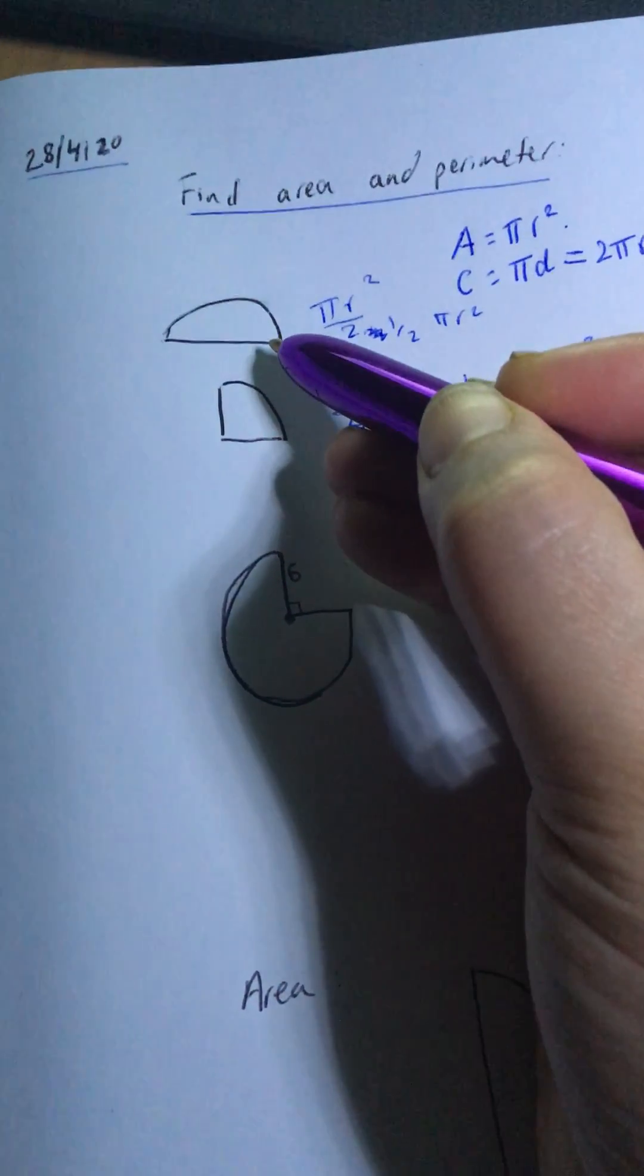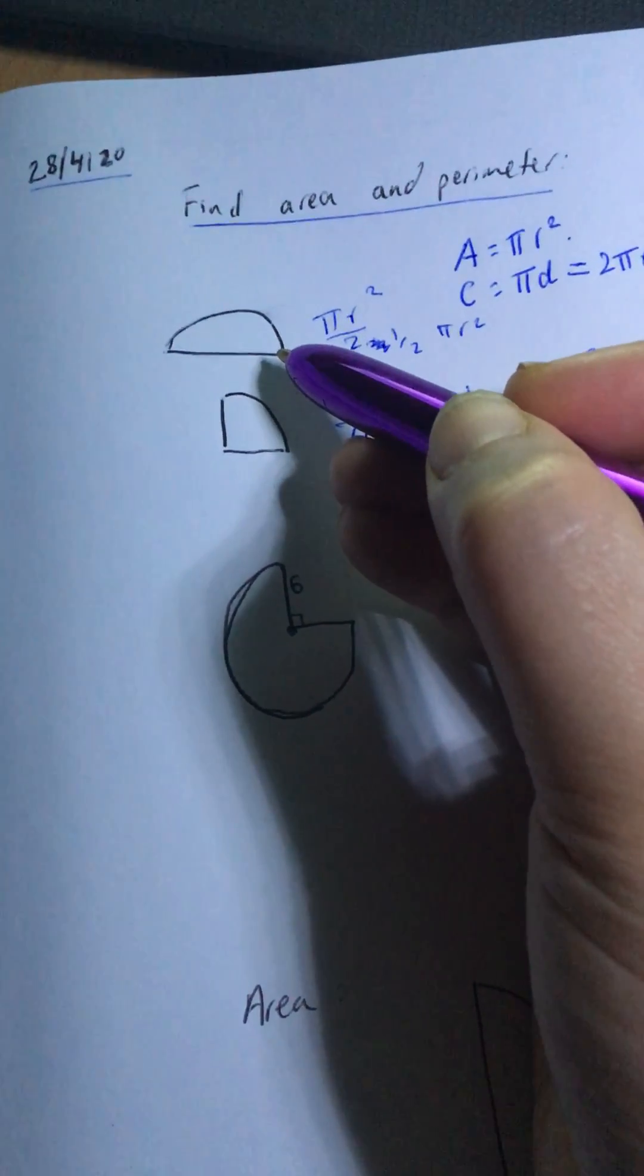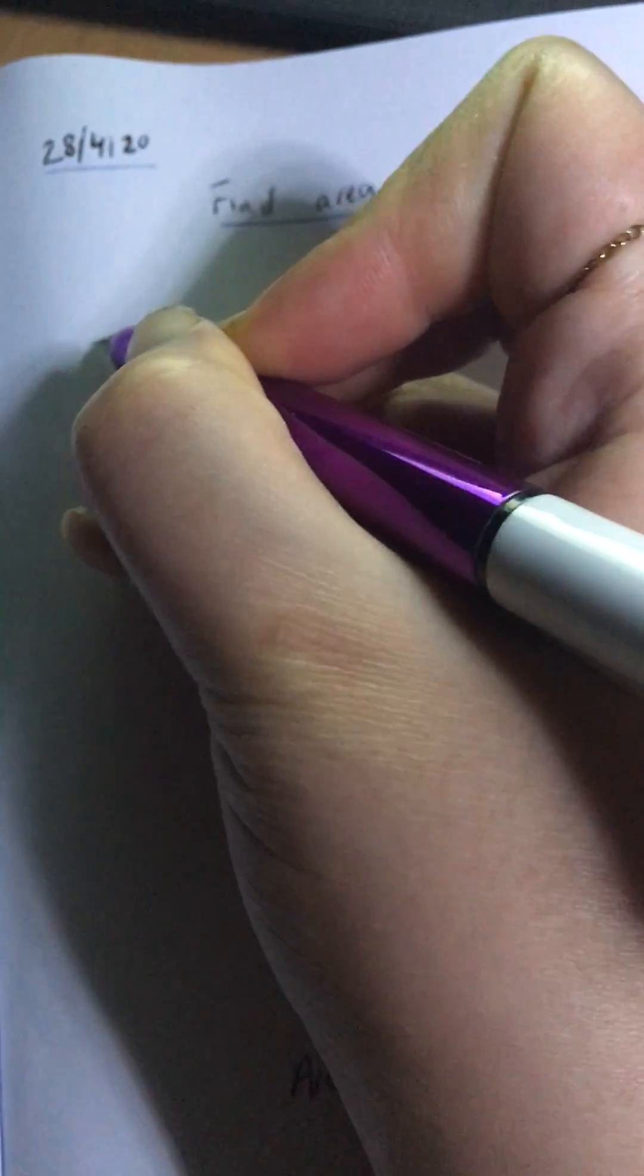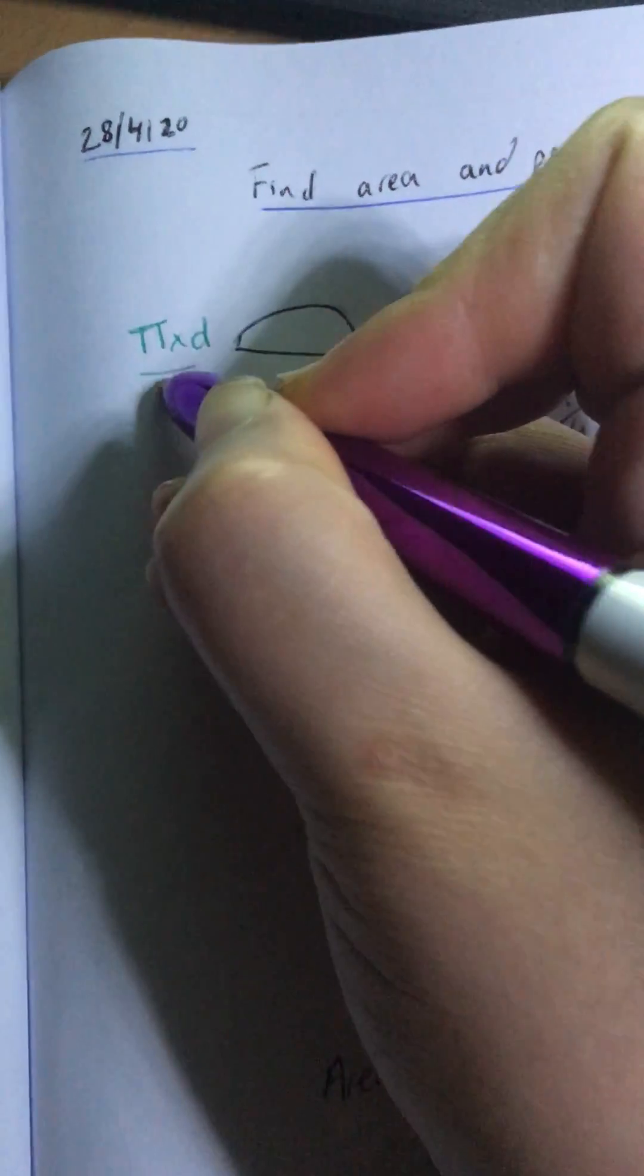To find the perimeter of a semicircle, I use the perimeter of a circle, or circumference of a circle, which is πd. So π times d. But because I only have half of a circle, I divide by 2.